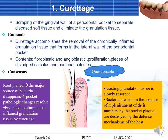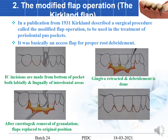However, curettage always remains questionable. After root planing, the major source of bacteria disappears, pocket pathological changes begin to resolve, and there is no need to remove granulation tissue by curettage itself. After root planing, the existing granulation tissue is usually resolved and bacteria are absent. The bacteria present are destroyed by the defense mechanism itself. Therefore this procedure carries a big question mark regarding whether it provides any advantage beyond root planing.